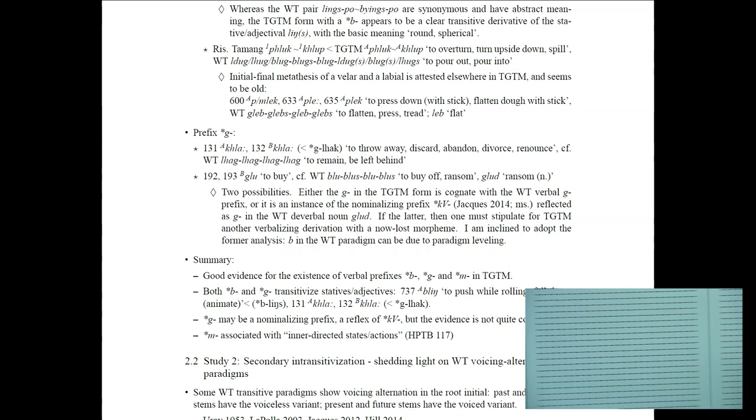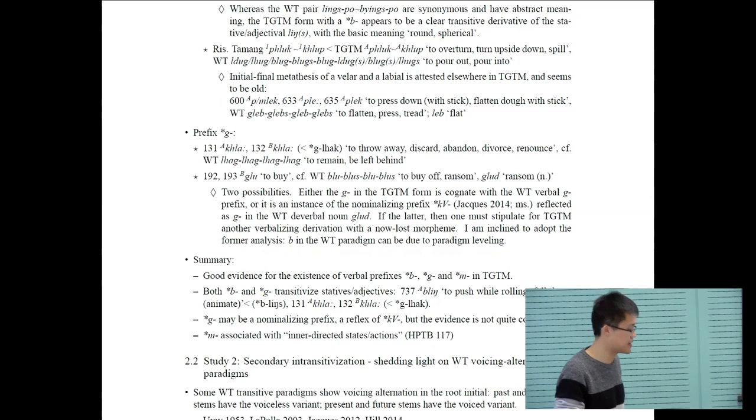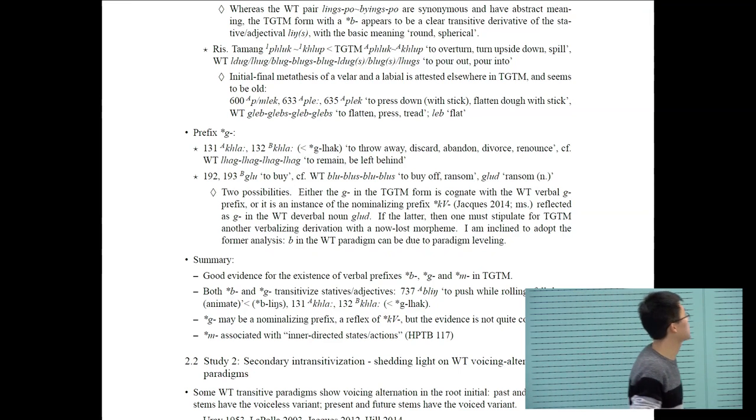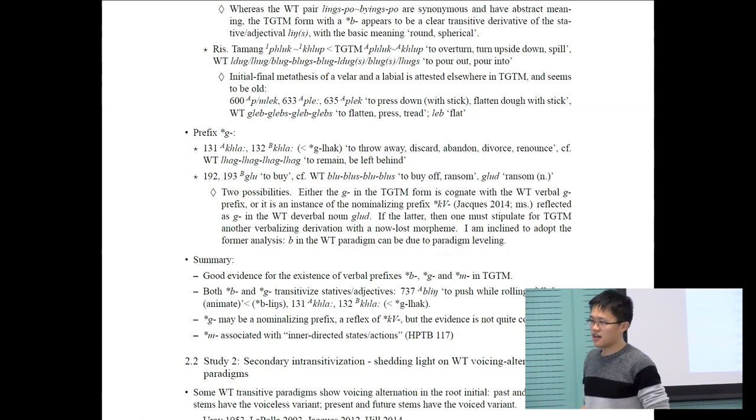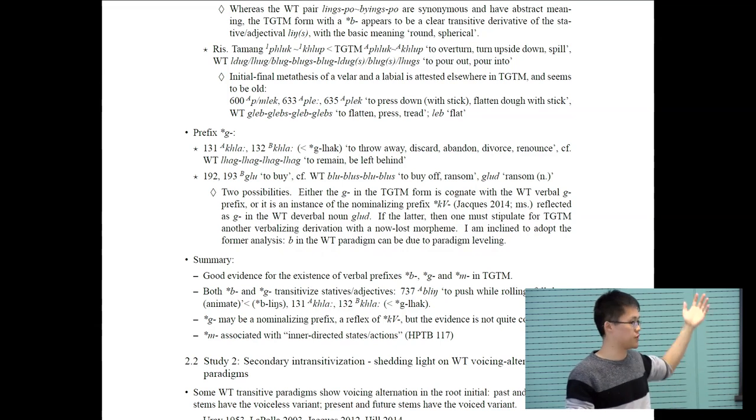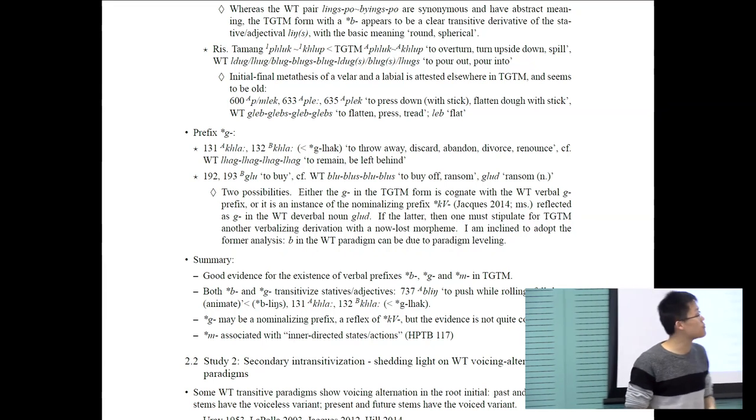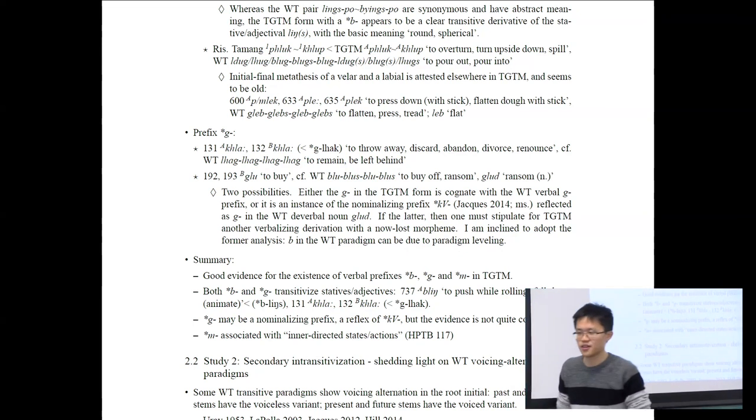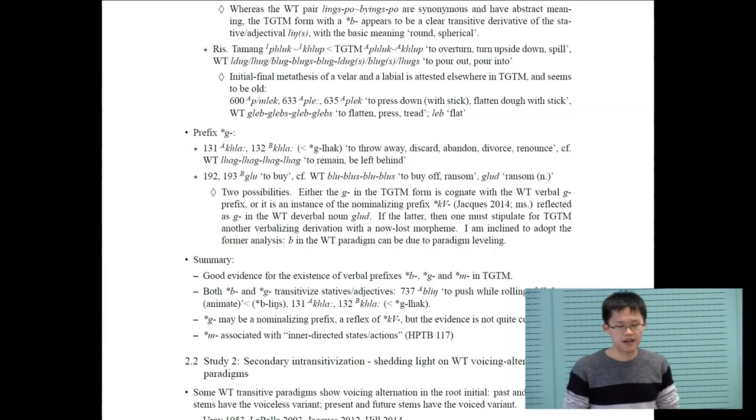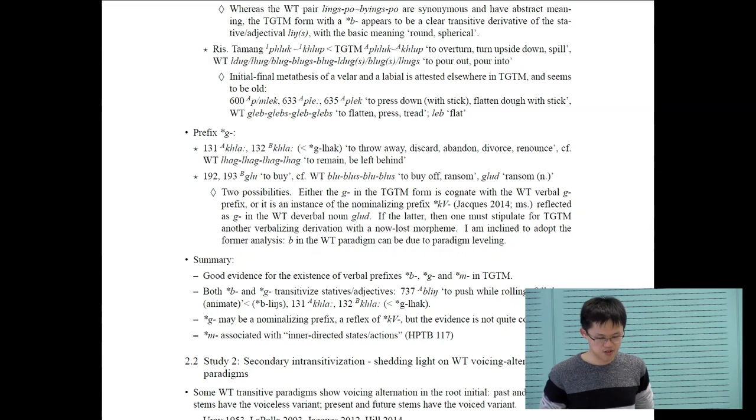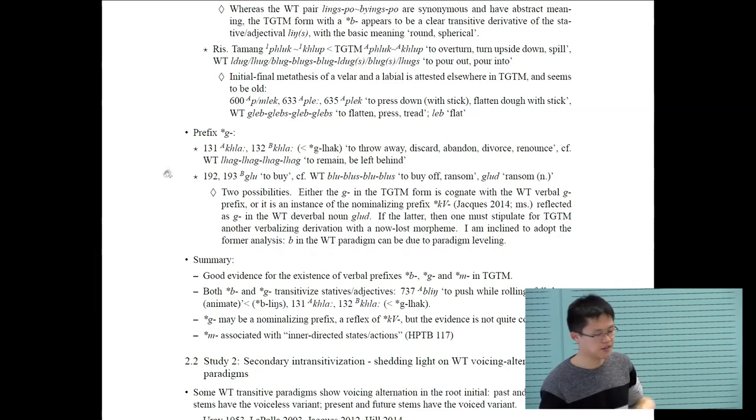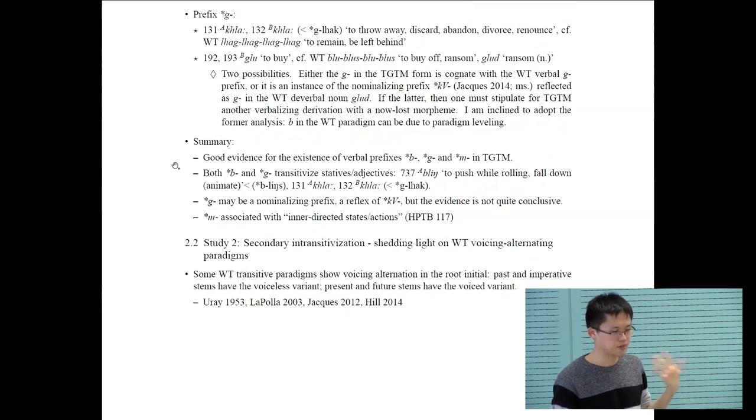What's interesting is that glub involves what Guillaume Jacques proposed as a G prefix that's separate from the verbal G prefix. He thinks it's a denominal prefix. For this form, there are two possibilities for the TGTM form. I think the G in the TGTM form is a cognate with the verbal G prefix in written Tibetan. The older pre-Tibetan paradigm would have been something like glue, loose, and TGTM inherits the G prefix form there.